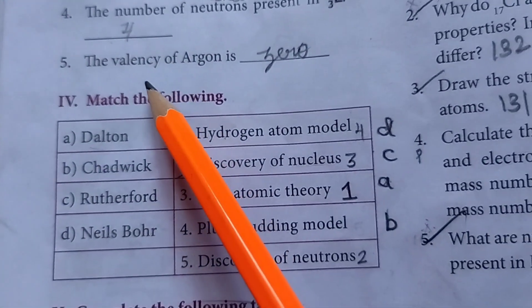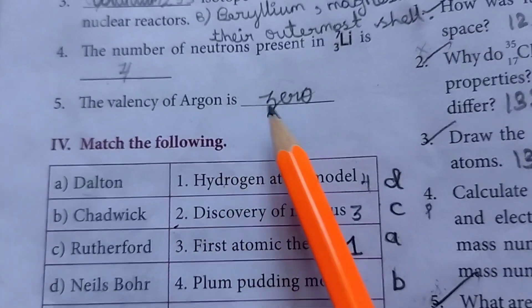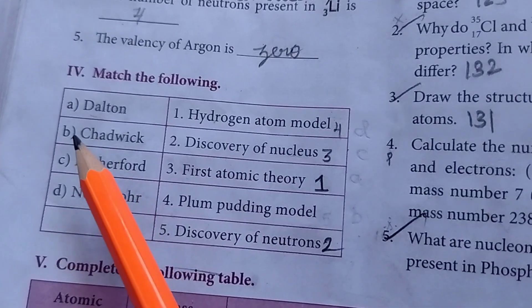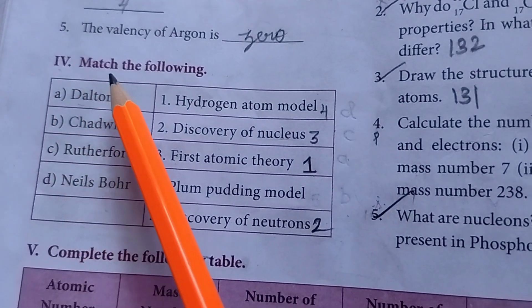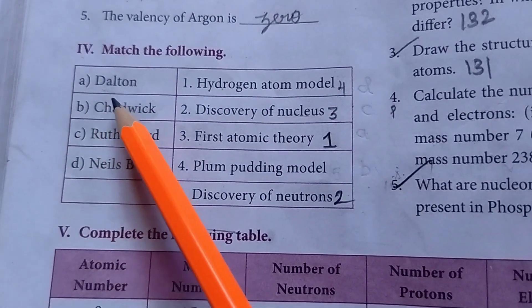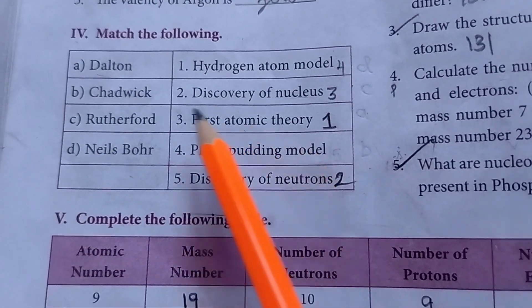The number of neutrons present in Li is 4. Then fifth one. Valency of argon is 0. Then fourth Roman letter match the following. First one. Dalton. First atomic theory.